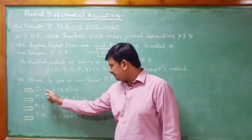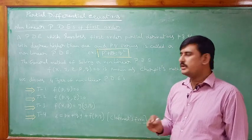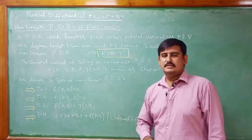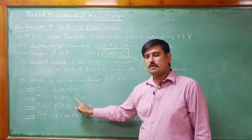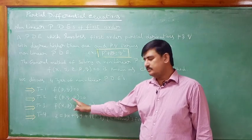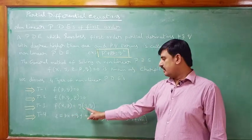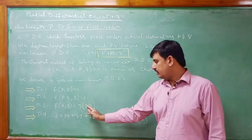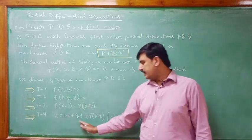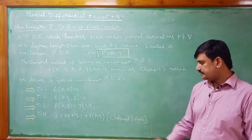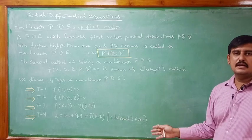Type 1: F(P, Q) = 0 — only P and Q terms, no X, Y, or Z terms. Type 2: F(P, Q, Z) = 0 — P, Q, and Z terms, no X and Y. Type 3: F(X, P) = G(Y, Q) — P and X terms on one side, Q and Y terms on the other side; this is the variable separable method. Type 4: Z = PX + QY + F(P, Q) — this is Clairaut's form.